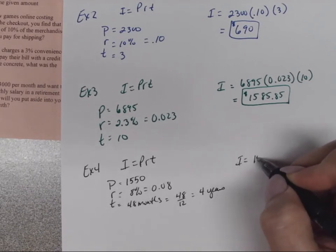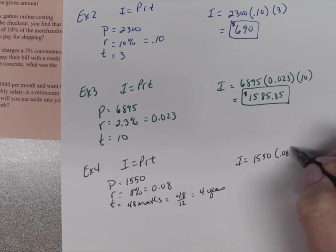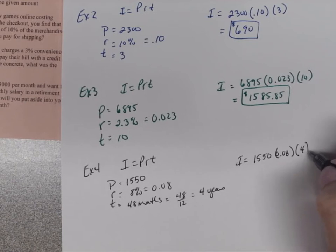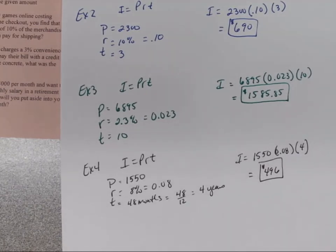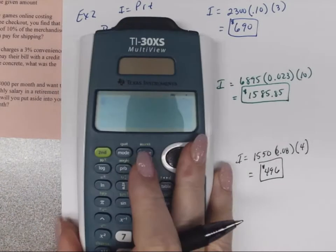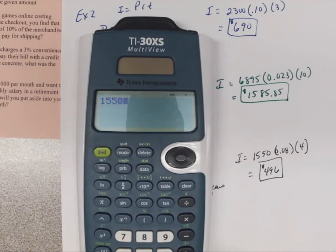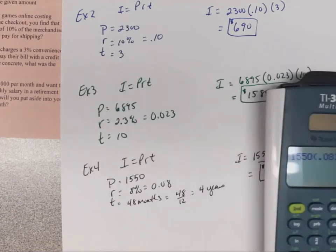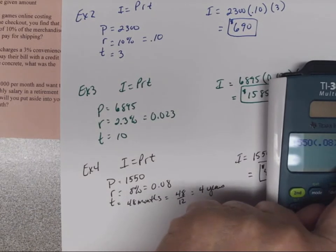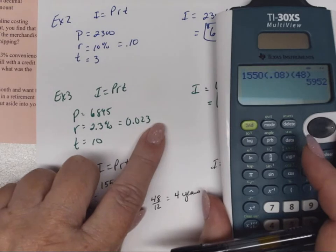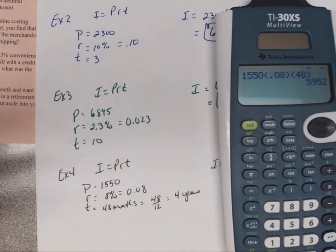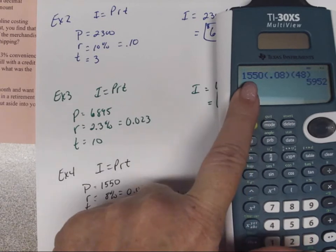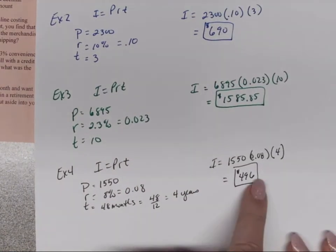Alright, so I will be equal to 1,550 times 0.08 times 4. And that will get you $496. So sometimes you've got to think about whether or not it makes sense. So if I had accidentally put 48, and I took and put the amount in my calculator, and I had put 48 instead of 4, I would have gotten $5,952. So think about that. In four years, is it reasonable that I would get that much interest off of that low amount? If it was $20,000, maybe, but not for $1,550 in a four-year period at that interest rate. So sometimes you've got to make sure it makes sense.